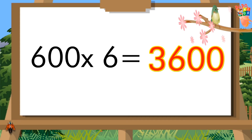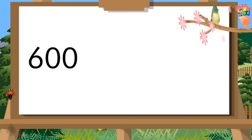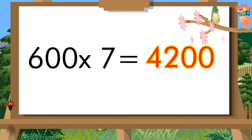600 sixes are 3,600. 600 sevens are 4,200.